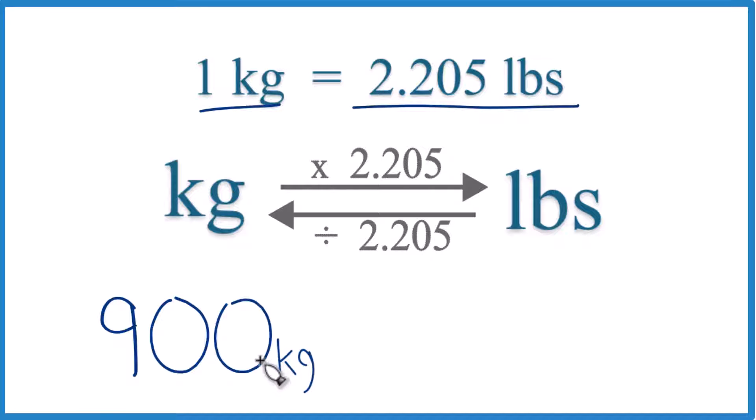900 kilograms is just 900 times this number here. This is what we call a conversion factor. We use it when we go from kilograms to pounds or pounds to kilograms.